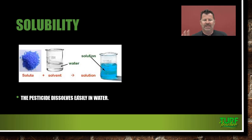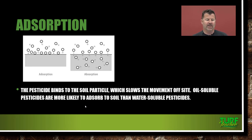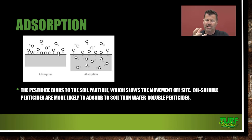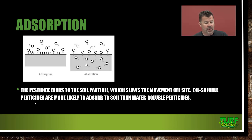Solubility means the pesticide dissolves easily in water. Pesticides that dissolve in water easily are more susceptible to being washed away in surface water, so you need to take that into consideration. Adsorption means the pesticide binds to soil particles, which slows the movement off-site. Oil-soluble pesticides are more likely to adsorb than water-soluble pesticides. Adsorption is the sticking to clay particles, whereas absorption is where they're actually mixing with the soil. Adsorption will actually slow the process of the pesticide being transported from one site to another, which is a good thing.